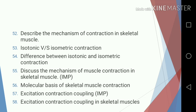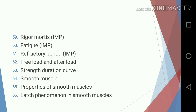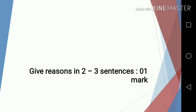Fifty-three, isotonic and isometric contraction; fifty-four, difference between isotonic and isometric contraction; fifty-five, discuss the mechanism of muscle contraction in skeletal muscle; fifty-six, molecular basis of skeletal muscle contraction; fifty-seven, excitation-contraction coupling; fifty-eight, excitation-contraction coupling in skeletal muscles; fifty-nine, rigor mortis; sixty, fatigue; sixty-one, refractory period; sixty-two, free load and after load; sixty-three, strength duration curve; sixty-four, smooth muscle; sixty-five, properties of smooth muscles; sixty-six, latch phenomena in smooth muscles.